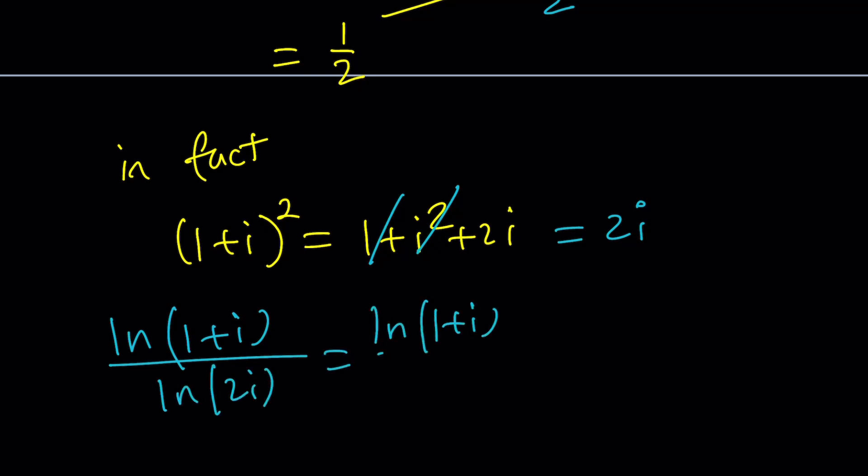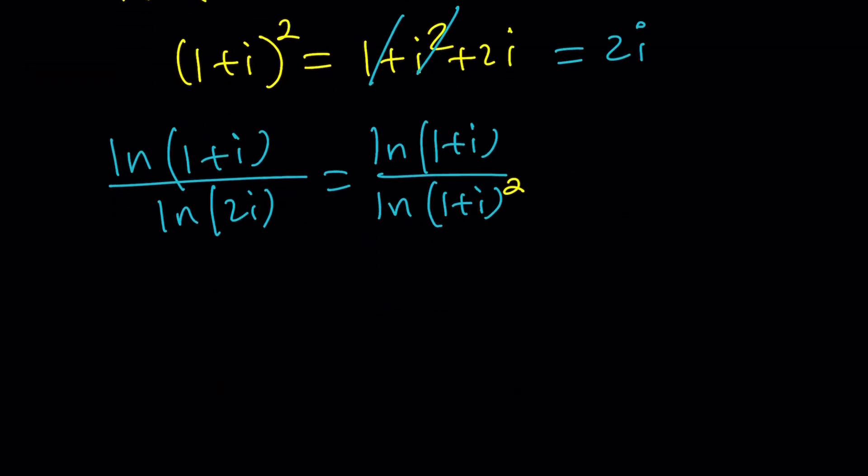Now, this is going to be ln 1 plus i divided by ln 1 plus i to the second power. Now, under certain conditions, it doesn't always happen. But we can move this 2 to the front. And then it becomes ln 1 plus i divided by 2 ln 1 plus i. And then ln 1 plus i cancels out nicely. And then we end up with 1 half one more time. But again, this is just a particular value of a multi-valued expression.